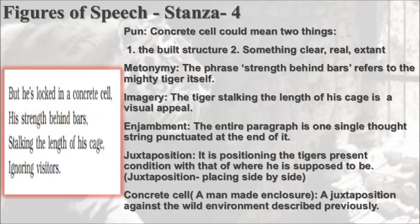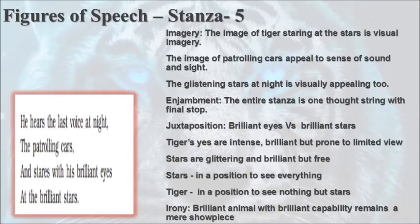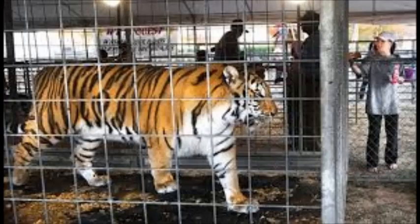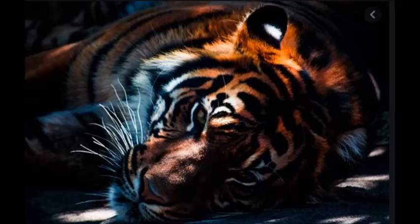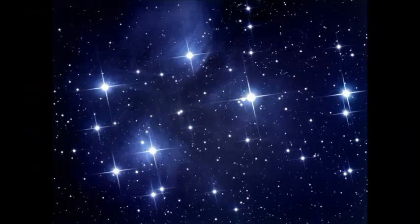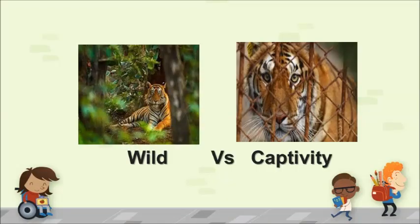The poet has also used the figure of speech juxtaposition quite often. The tiger's present condition is contrasted with that of where he is supposed to be. In this case, 'concrete cell', a man-made enclosure, is a juxtaposition against the wild environment described previously. The poet has also juxtaposed the brilliant eyes of the tiger with the brilliant stars in order to demarcate the condition of the tiger — confinement versus freedom.